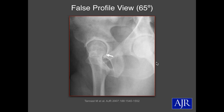A steeper view at about 65 degrees is called the false profile view. This is used more commonly for things like developmental dysplasia of the hip. It's useful for looking at the depth of the acetabular socket to see if there's good femoral head coverage. It's also a good way to look at narrowing in different parts of the hip joint that are not necessarily visible on other views.